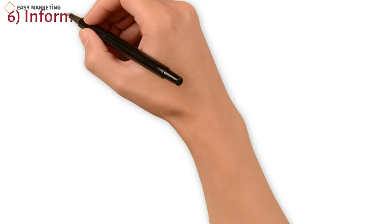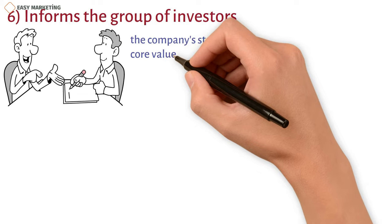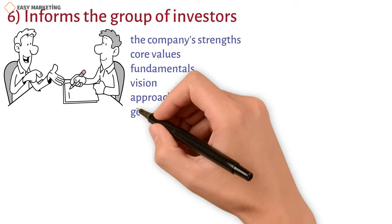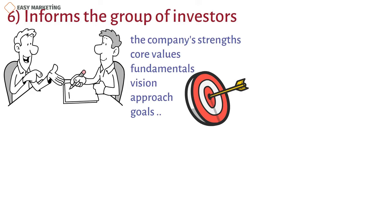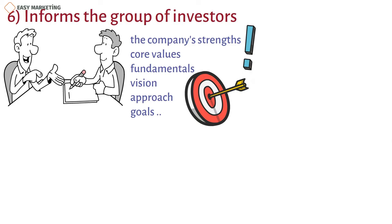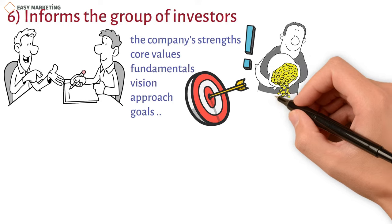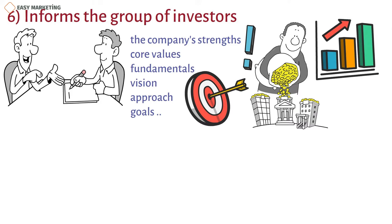Six: informs the group of investors. Marketing communication tells investors about the company's strengths, core values, fundamentals, vision, approach, and goals, as well as its competitive advantages, unique selling propositions, and the features and attributes of the products and services offered to the target market. Once the investors are happy with the company's goals and ideals, they are ready to put money into the business, which helps management reach its financial goals, boost business operations, improve sales, and lead to more revenue.